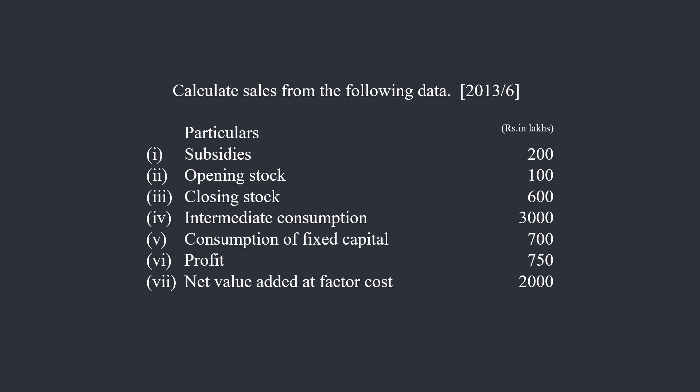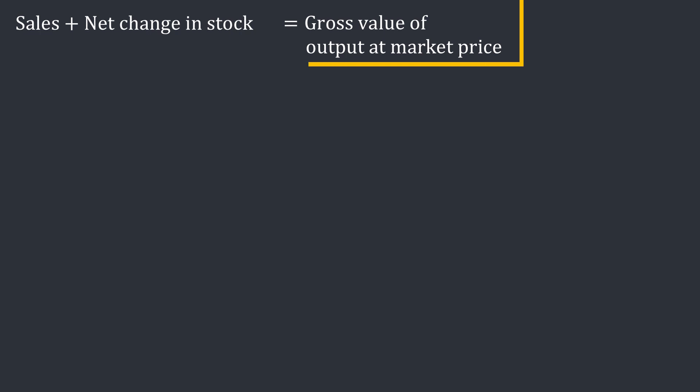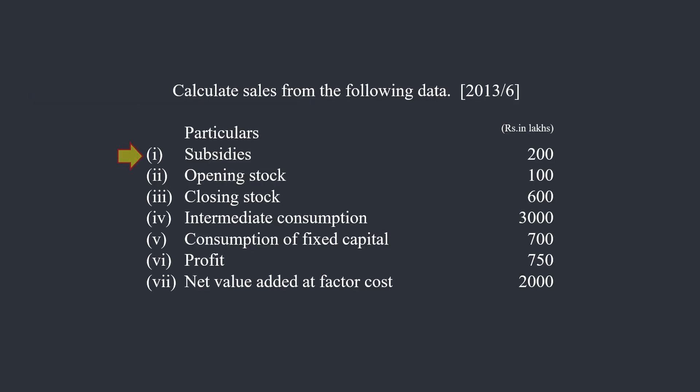From the given information we have to calculate sales. We know that sales plus net change in stock gives the gross value of output at market price. If we know the gross value of output at market price, we can find out sales. But we do not have that value directly. There is another way to find gross value of output at market price — we shall move step by step.